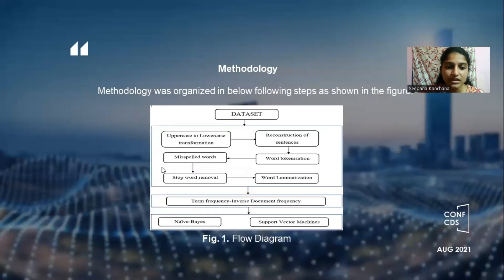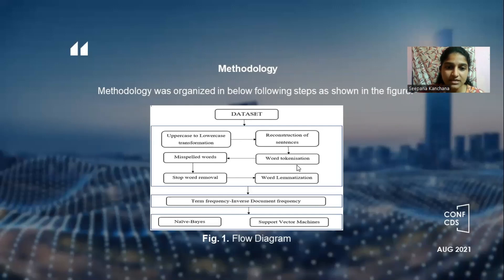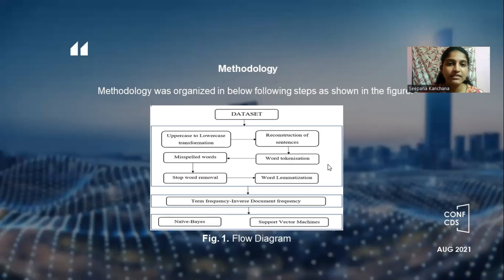Coming to the methodology, this flow diagram mainly tells about the methodology in four steps. The first step is dataset collection from various websites or e-commerce websites. Preprocessing involves six main steps, followed by feature extraction using term frequency-inverse document frequency. Finally, for classification, it uses the Naive Bayes and Support Vector Machine algorithms. Simply: data collection, preprocessing, feature extraction, and classification.